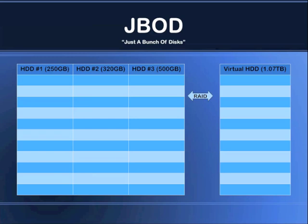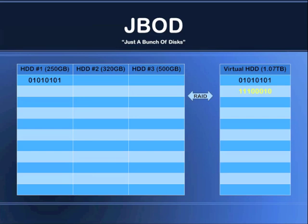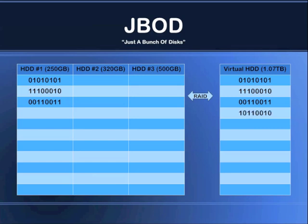Let's see how data is distributed through the array. First we get a set of data from the operating system, and the RAID controller or JBOD controller takes that data and writes it to disk number one. We get another set of data and the controller writes it to disk number one. And a third set of data — the controller writes it to disk number one. Let's say for this demonstration that disk number one is now full. When the operating system then wants to write another set of data, the controller will take that and write it to the next available disk, which is disk number two.